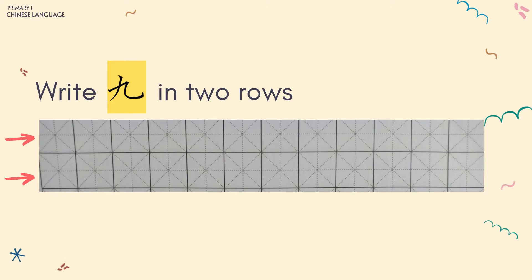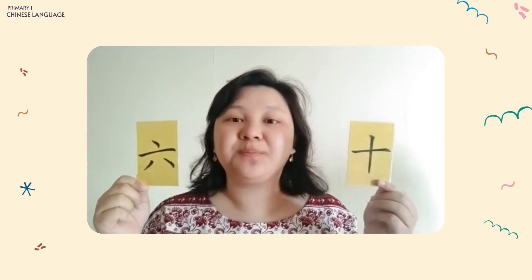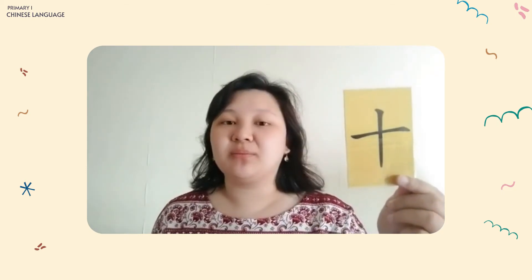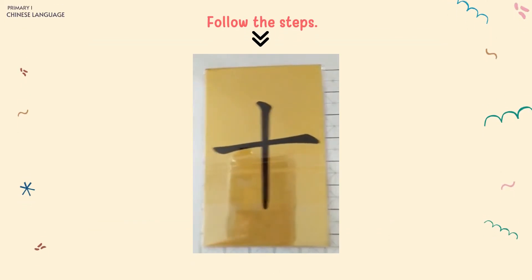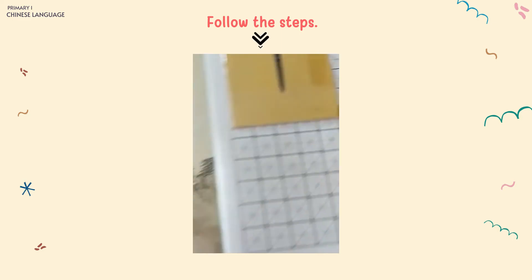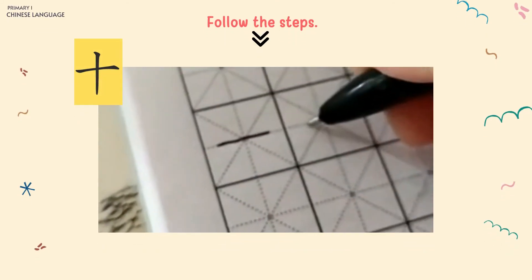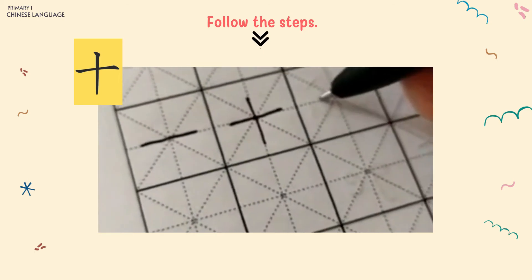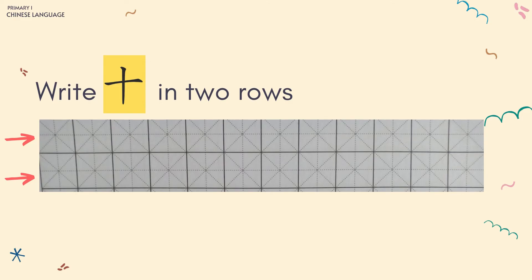And don't forget, friends — please write it in two rows again. Now this is the last number. Which one is Sh? Yes, it's this one. Now let's write it again in your writing book. This is Sh — Sh is number ten. Let's see how to write Sh in Han Ze. First let's write this first. Sh is number ten. And don't forget, friends — please write it in two rows again.